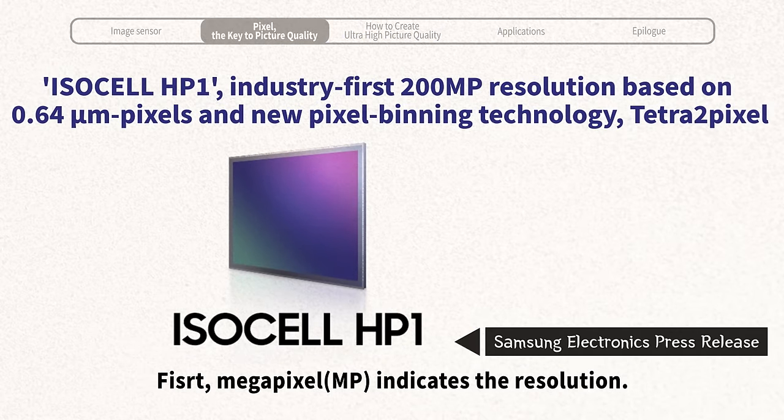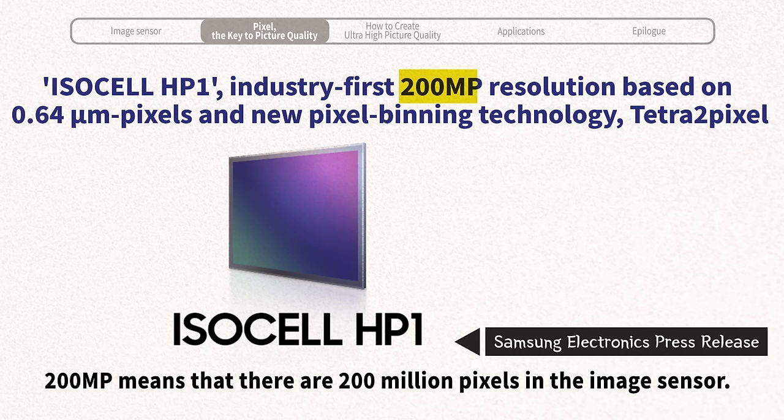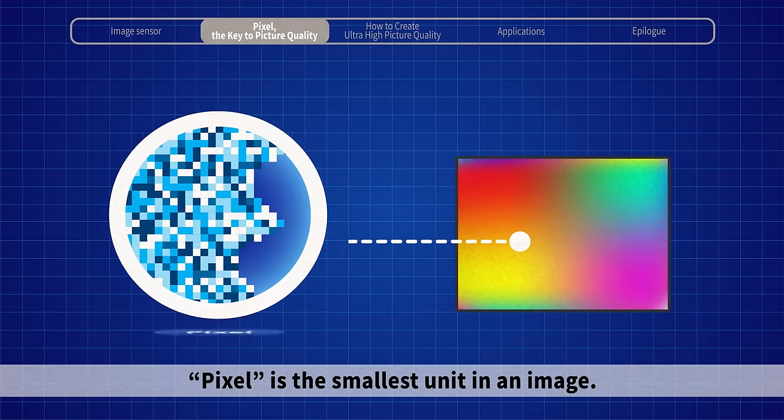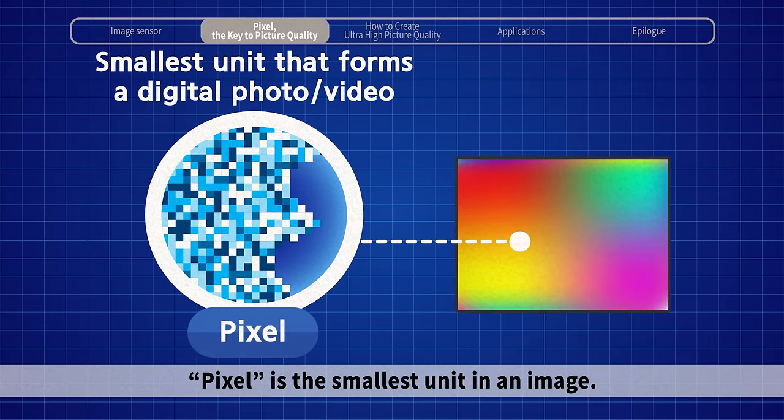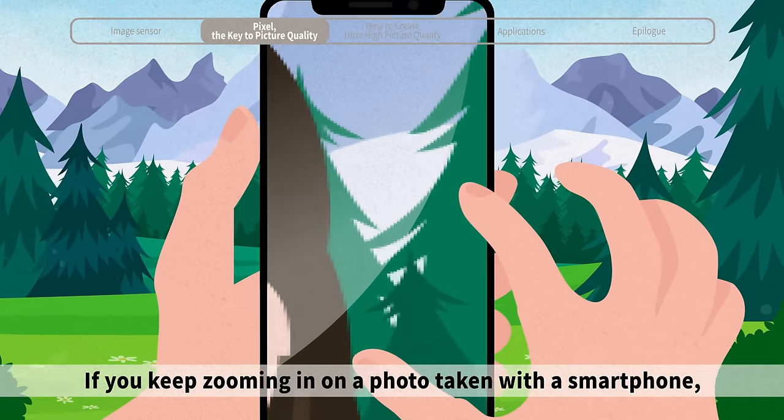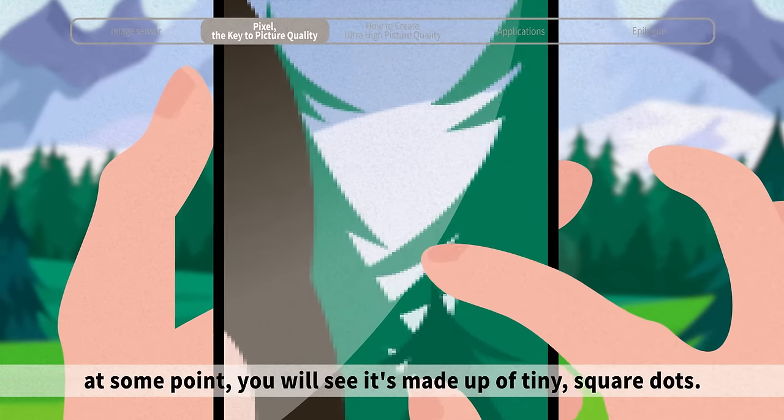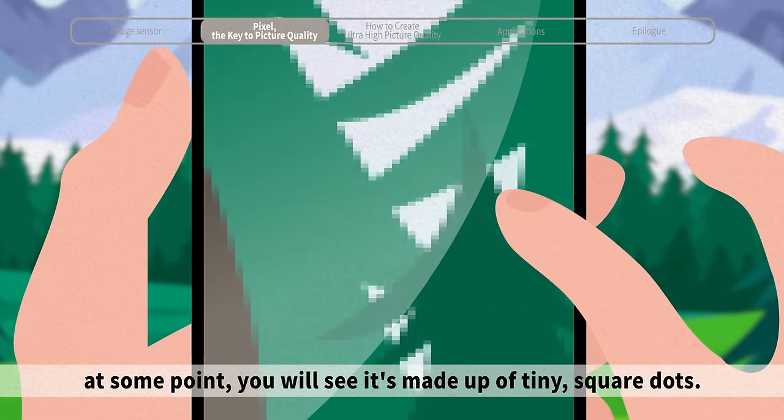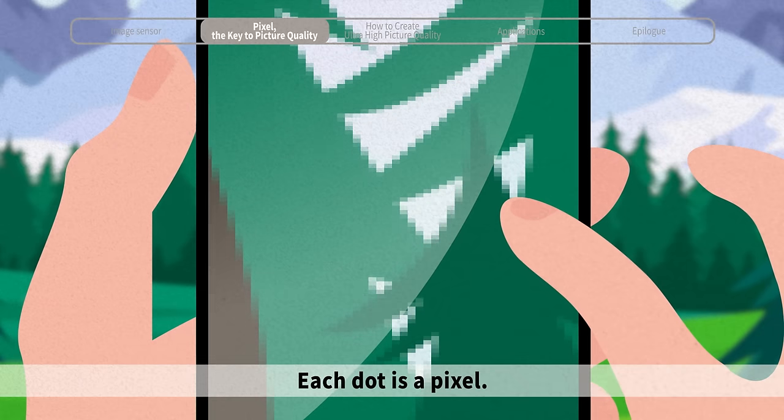First, megapixel indicates the resolution. 200 megapixels means that there are 200 million pixels in the image sensor. Pixel is the smallest unit in an image. If you keep zooming in on a photo taken with a smartphone, at some point you will see it is made up of tiny square dots. Each dot is a pixel.